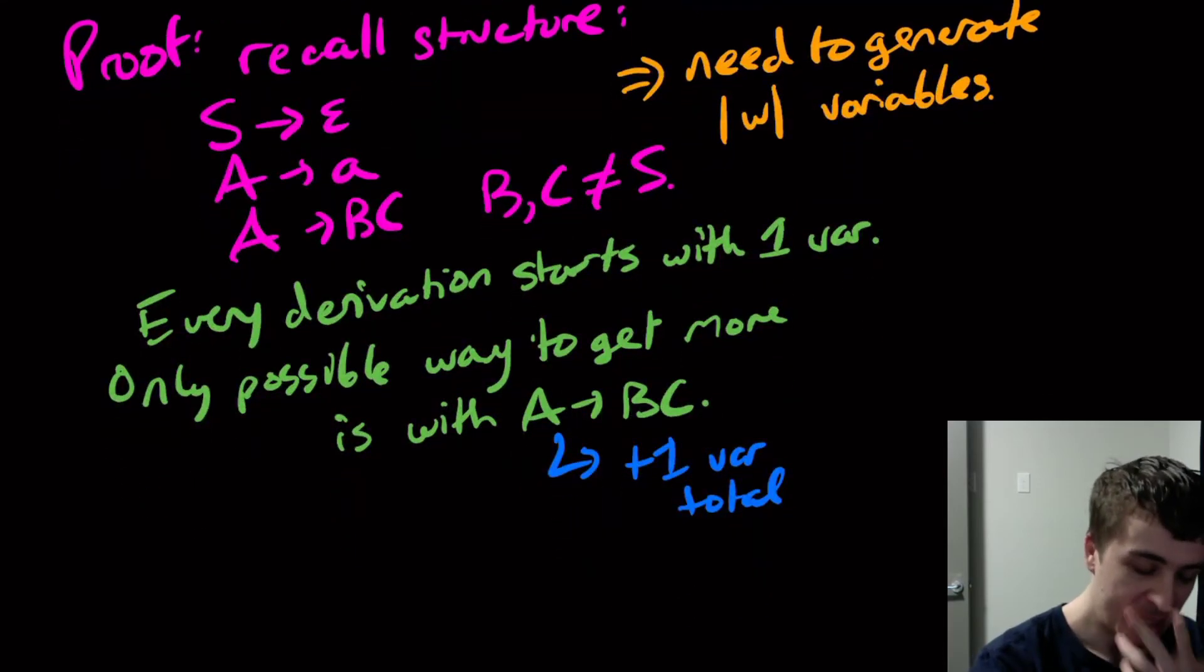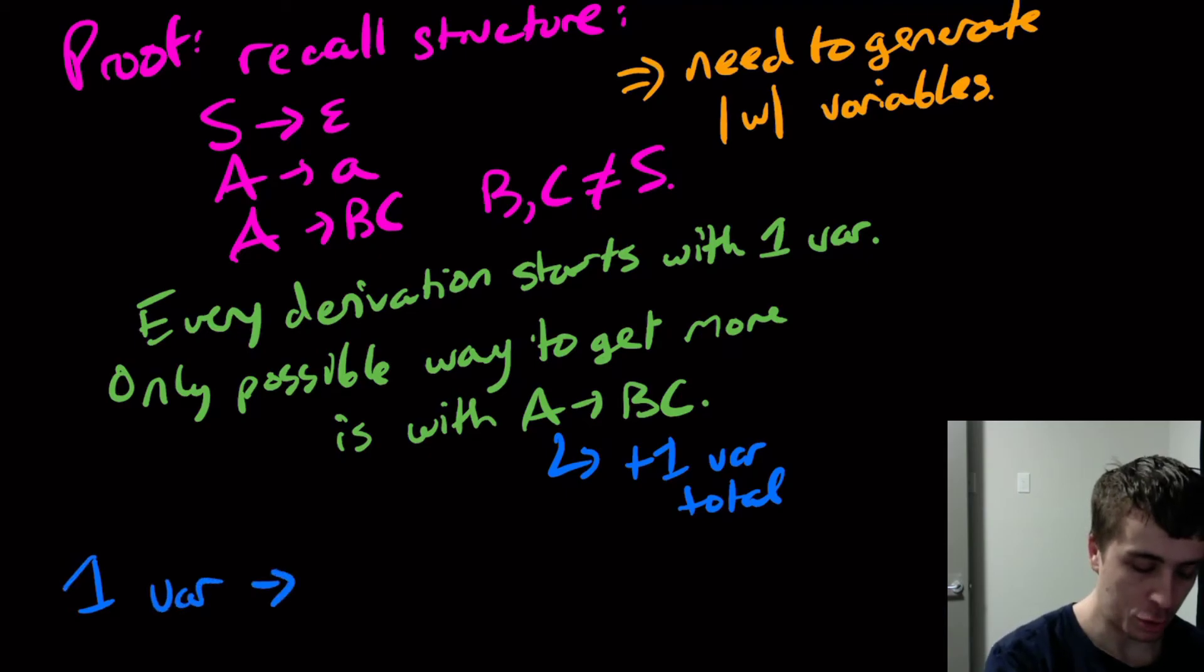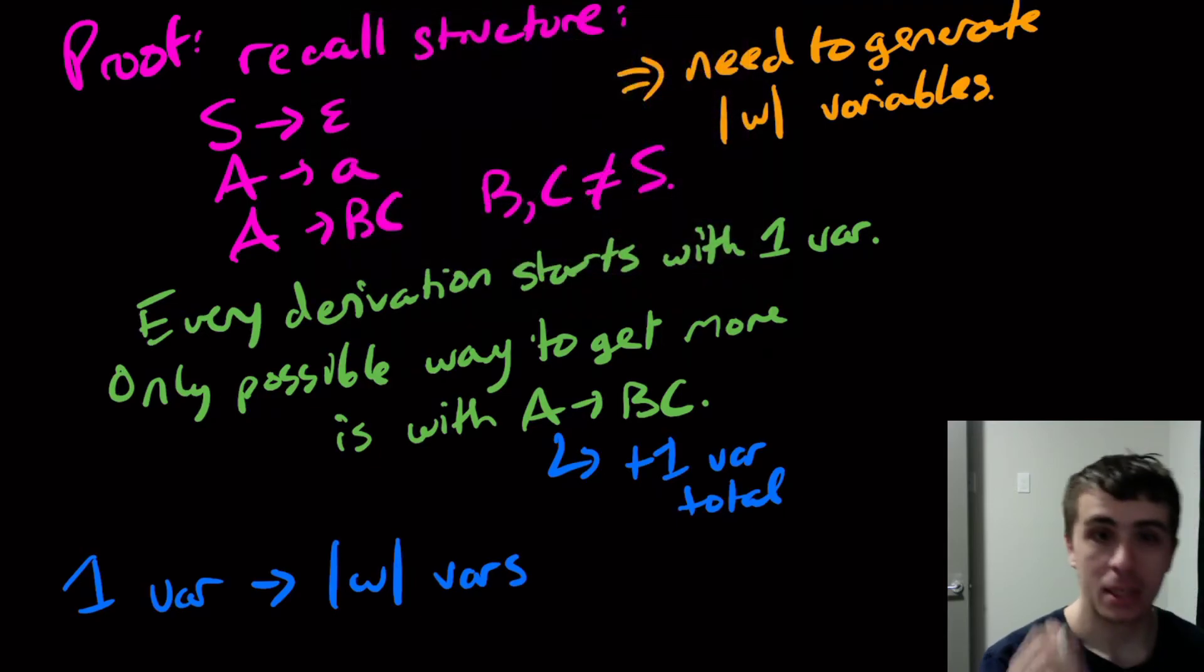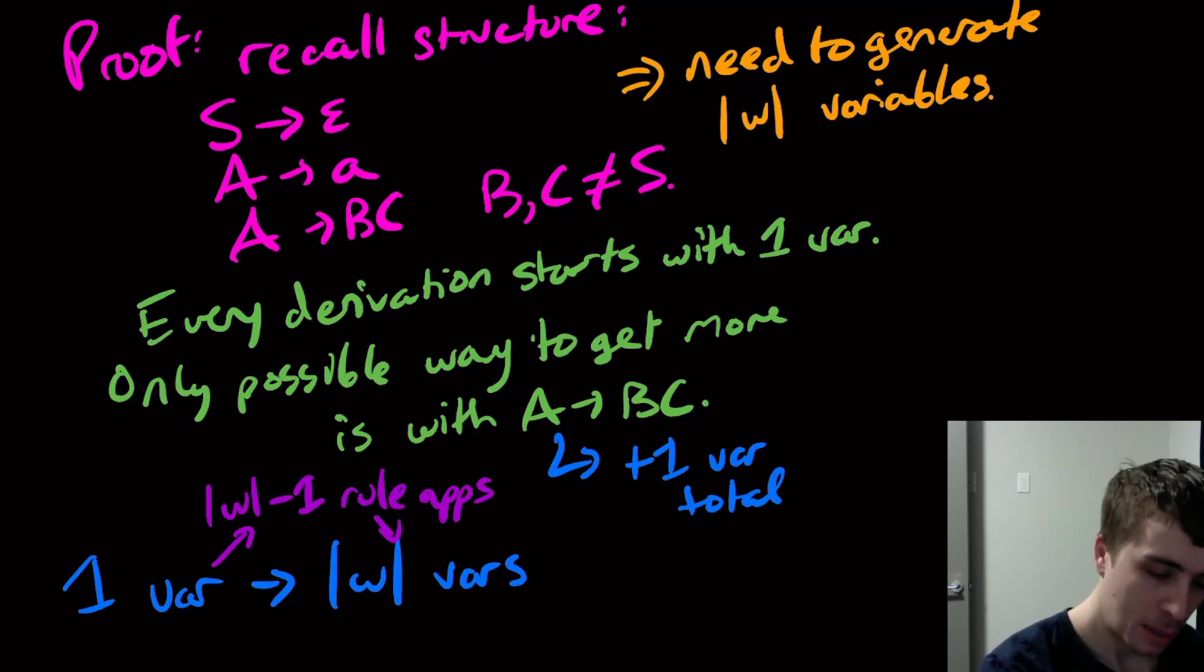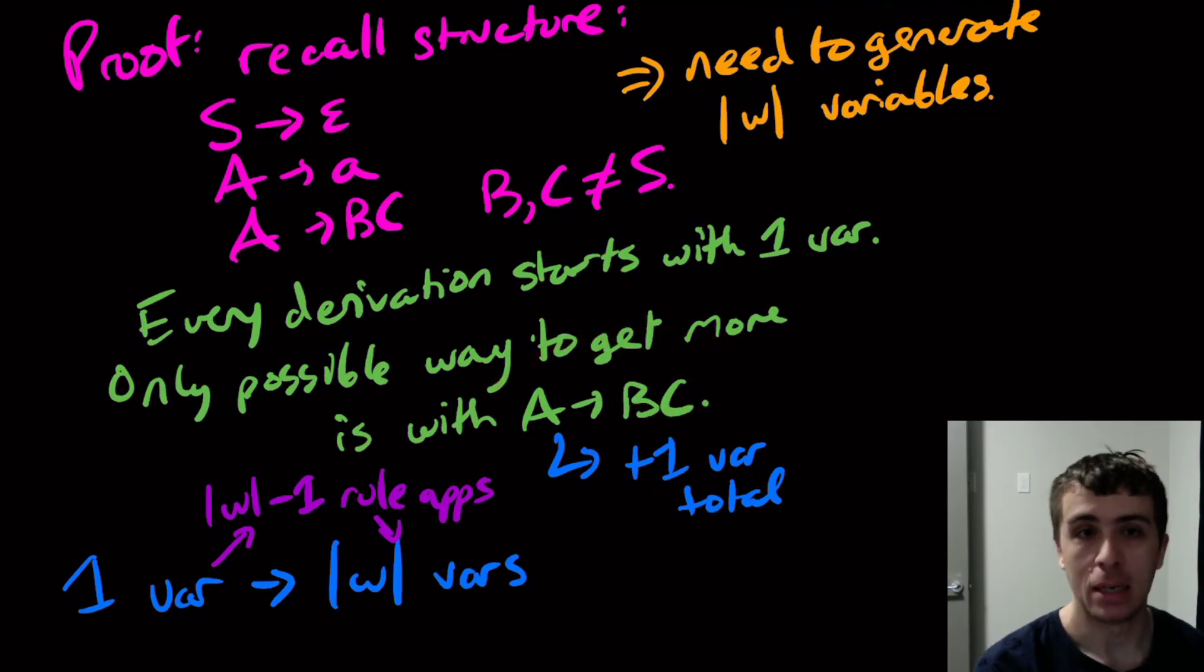So this tells us that we need to go from one variable to the length of w variables. And as you might expect, whichever rules in order that we apply them, this will take the length of w minus 1 rule applications to do this part right here, to go from here to here. Because we start with one and we gain one every single one of these we have to apply anyway. So we have to do w, length of w minus 1 to get to that.